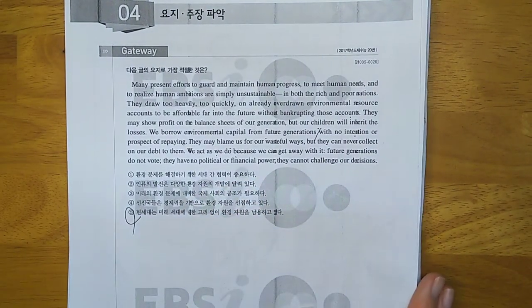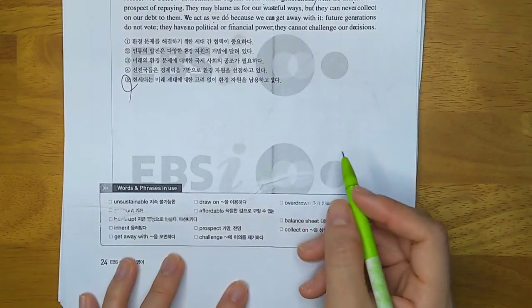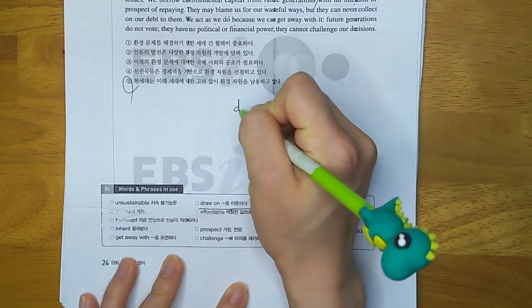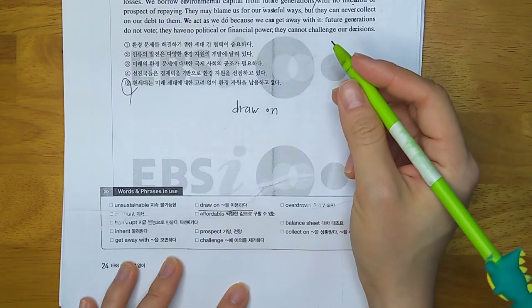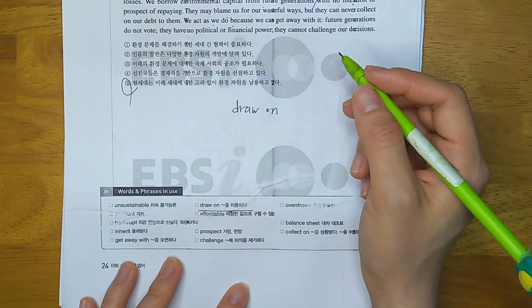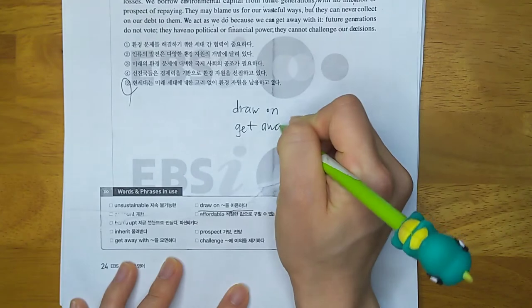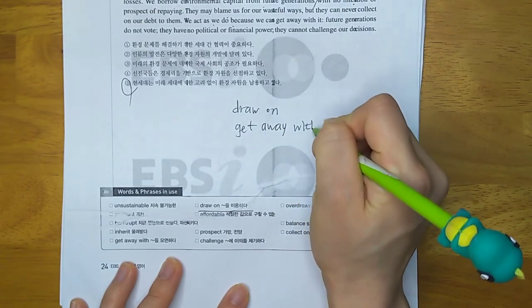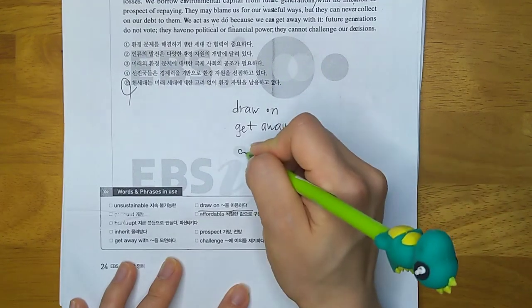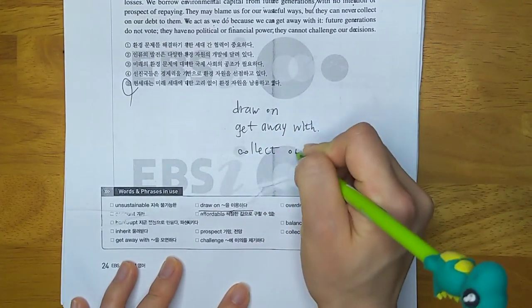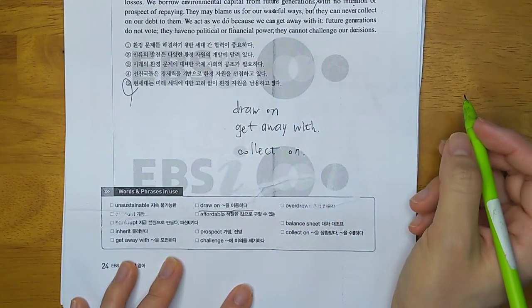Okay, number 5. Draw는 or 이용하다? Unsustainable account. Okay, inherit, get away with, balance sheet, collect on, overdrawn, challenge.